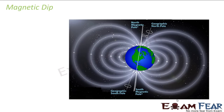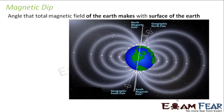Now let us go to the second magnetic element, that is the magnetic dip. Magnetic dip is also sometimes known as the magnetic inclination, and it is the angle that the total magnetic field of the earth meets with the surface of the earth. So till now we were talking about the vertical reference.